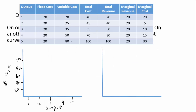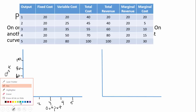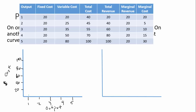We're going to draw our total revenue line in green. At the first unit it's a total revenue of $20, second unit $40, third unit $60, fifth unit $100. That gives us a straight line all the way up. Then let's draw our total cost: at the first unit it's 40, second unit 45, third unit 55, fourth unit 70, somewhere in there.